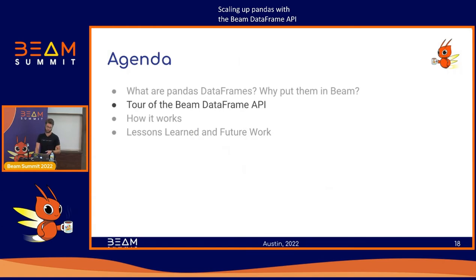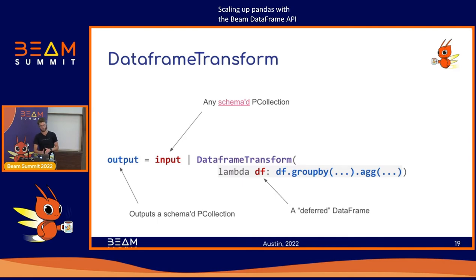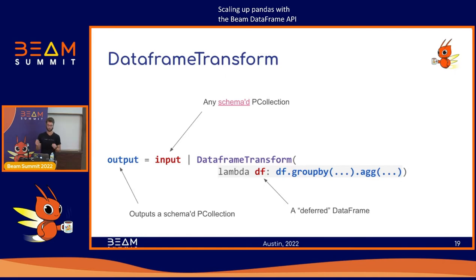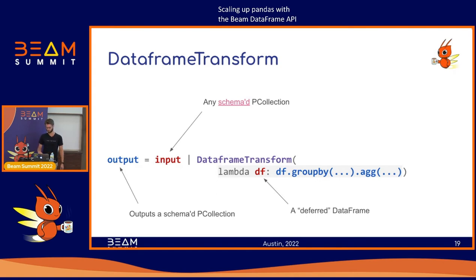The Beam DataFrame API has a DataFrame transform at its core. The DataFrame transform is just a P transform — a very complicated one. It's very similar to the SQL transform: it takes an input P collection that has a schema associated with it. You apply a P transform that takes a single argument describing potentially very complicated pipeline logic — in SQL transform that's a SQL query, and in DataFrame transform it's a function that takes an input deferred DataFrame object and does some computation on it. When you apply that P transform, we produce an output P collection with a schema presenting the result.